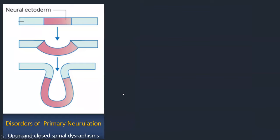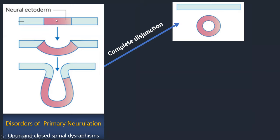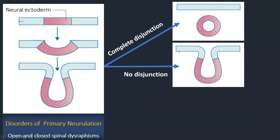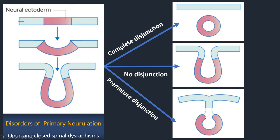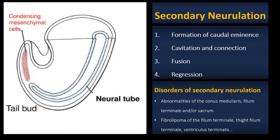What happens if something goes wrong? Many spinal dysraphisms can be explained by a defect during primary neurulation. We want complete disjunction and ectodermal closure over the neural tube. One problem is that no disjunction occurs — the neural tube does not close and stays attached to the ectoderm. Another problem is premature disjunction without closure of the neural tube — the ectoderm closes but the neural tube itself does not close. We will see various spinal dysraphisms that can be explained by these errors during primary neurulation.